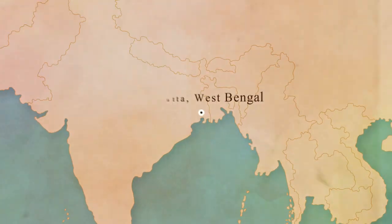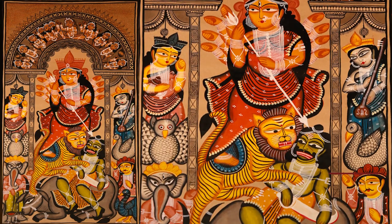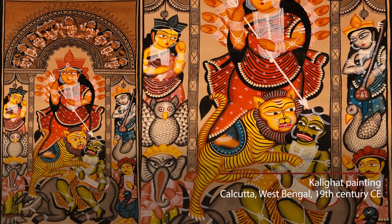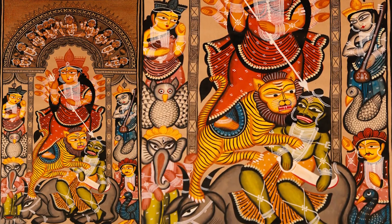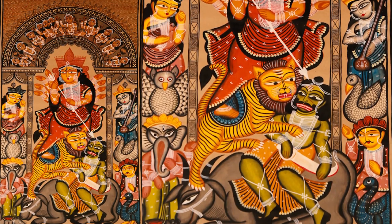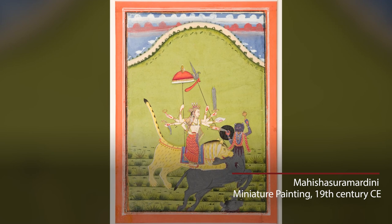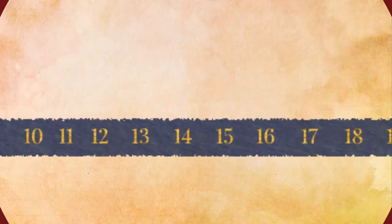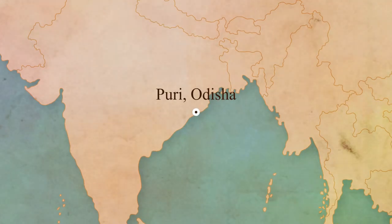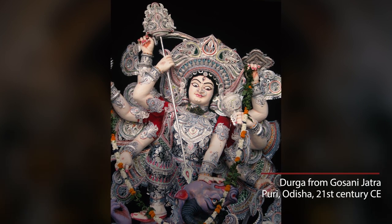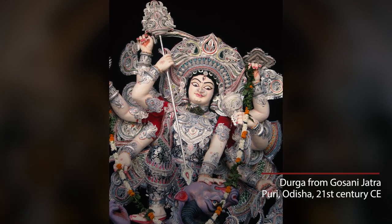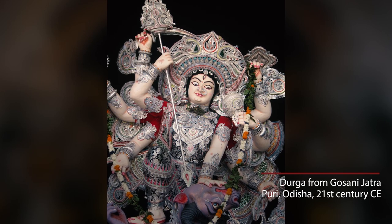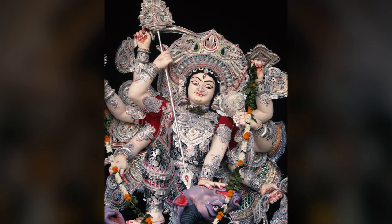And in Kalighat paintings, she appears with her two daughters, Lakshmi and Saraswati, and her two sons, Ganesha and Kartikeya. And in Durga Pandals today, we find this mother goddess, who is also a warrior goddess, appearing as part of our everyday traditions. Her image has a history of nearly 2,000 years, and that's fascinating.